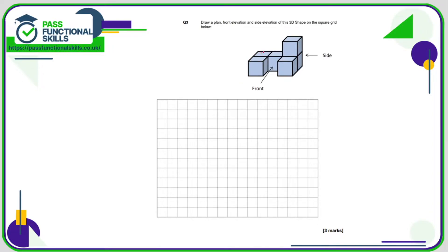From above, we would see one, two, three, four, five squares in a sort of horseshoe shape. The fact that this one's higher up doesn't make any difference at all, so that would therefore look something like this. From the side, we would only see one, two, three — so that would be a sort of reverse L-shape.